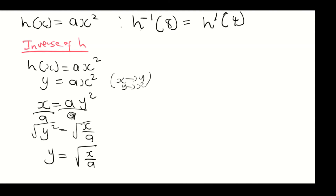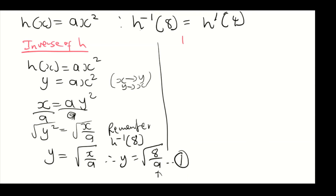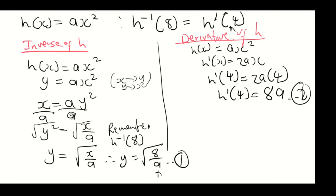Now find the derivative of h. With h(x) = ax squared, h prime of x = 2ax. Substituting x = 4 gives h prime of 4 = 2a times 4 = 8a. Call this equation 2. Setting h inverse of 8 equal to h prime of 4: the square root of 8 over a equals 8a. Square both sides to remove the square root: 8 over a equals 64a squared.